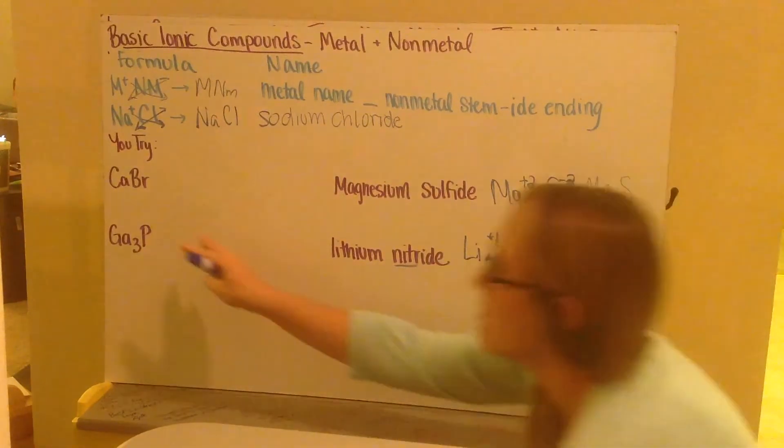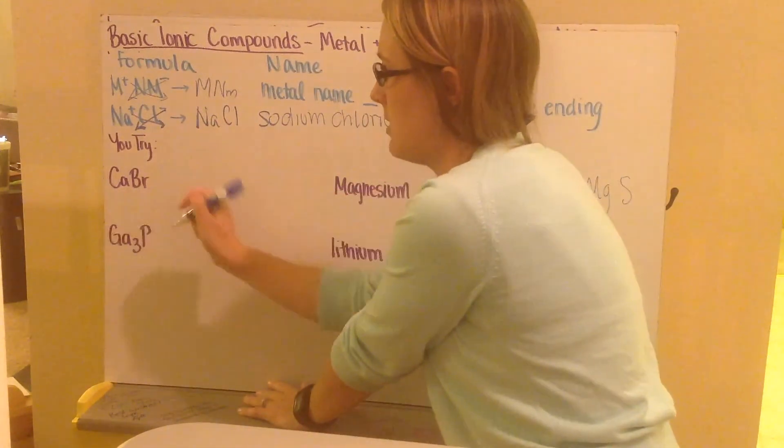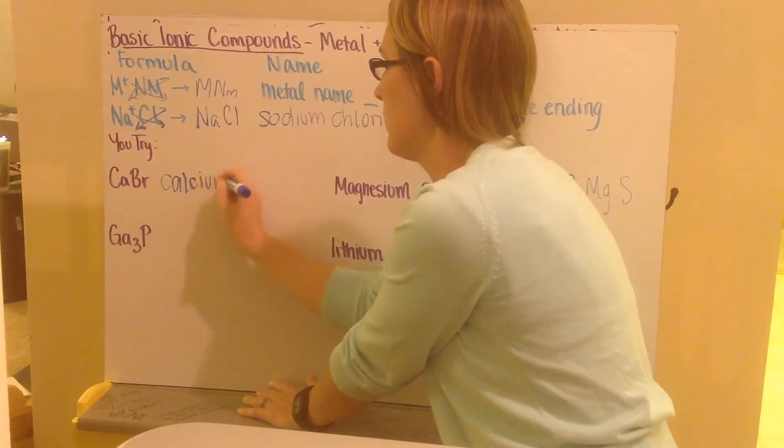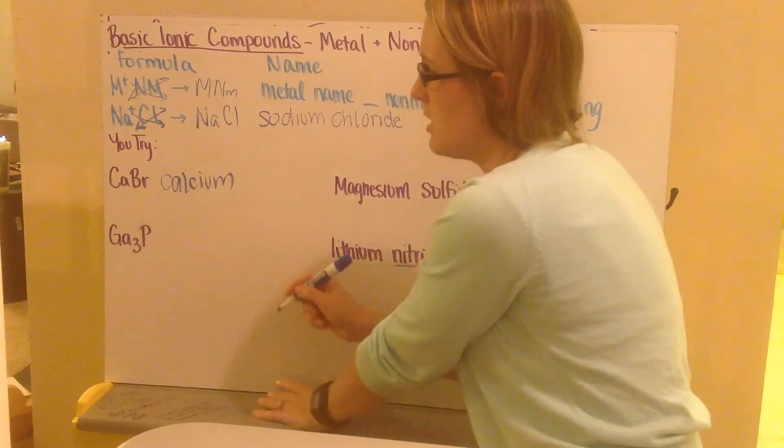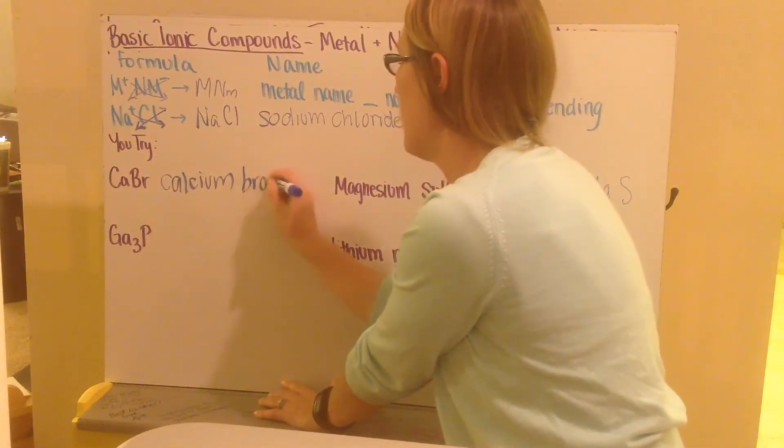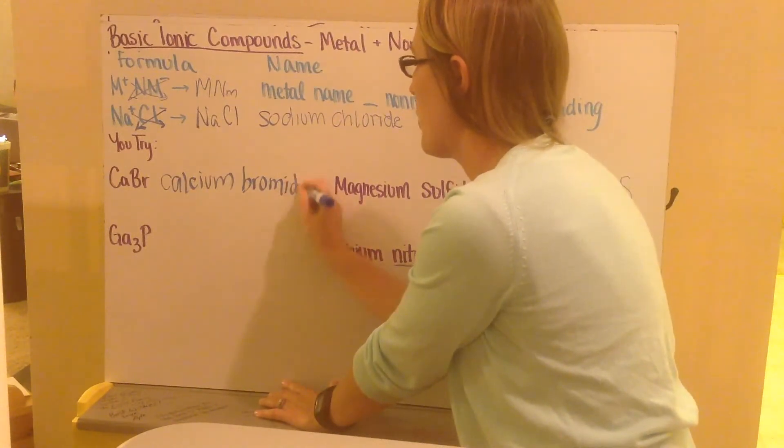Now if we go back to just our elements, we can go ahead and name them. Ca is calcium. I write my element name calcium. Br is bromine. I take my stem, bro, and I add my -ide ending. So I get bromide.